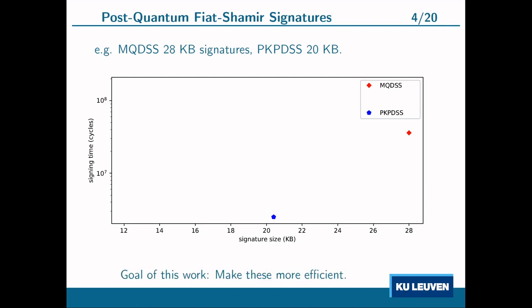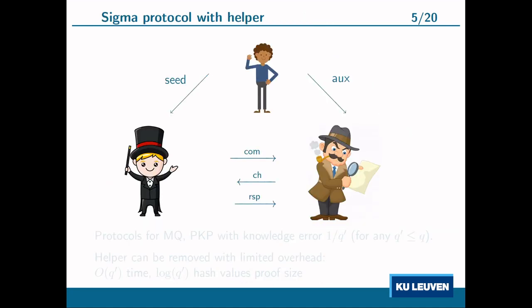In this work we construct sigma protocols with a lower soundness error, so they need to be repeated fewer times to achieve soundness, resulting in more efficient signature schemes. As a first step, we relax the definition of a sigma protocol by introducing a trusted third party called the helper. The helper runs a computation at the start of the protocol, sends the result as auxiliary information to the verifier, and sends the seed used for this computation to the prover. From then on the protocol proceeds like a normal sigma protocol with a commitment, a challenge, and a response.